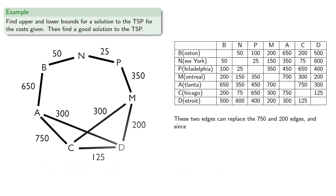So these two new edges would replace the 750 and 200 edges. And since the cost of those two edges is greater than the cost of the new edges, we should replace them.